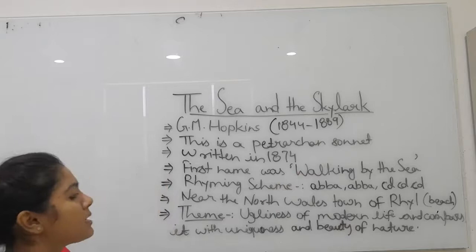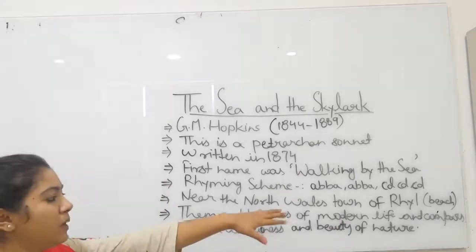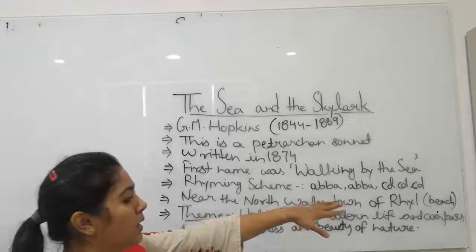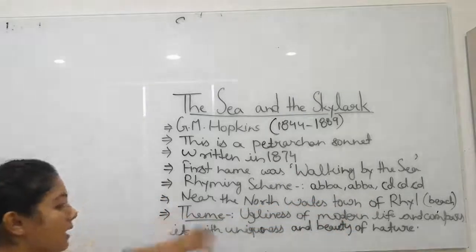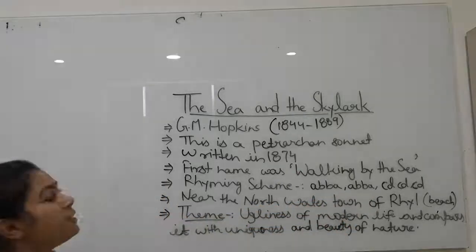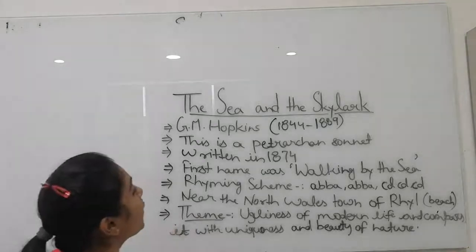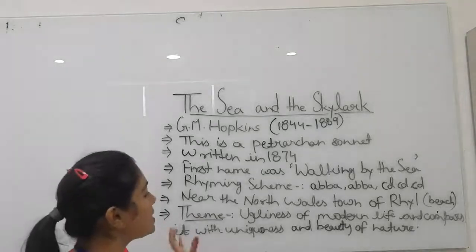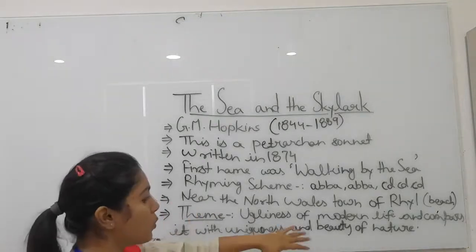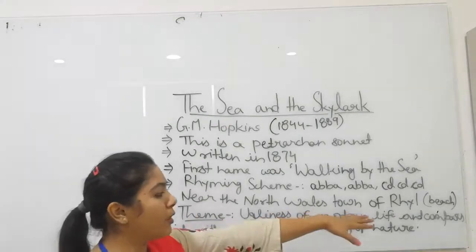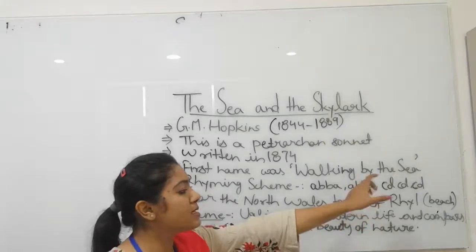The rhyming scheme is A-B-B-A, A-B-B-A, C-D, C-D, C-D. In the poem, the description is about near the North Wales town of Rhyl. Rhyl is a beach.